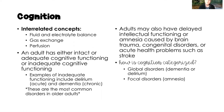Adults can also have delayed intellectual functioning or can suffer from amnesia caused by brain trauma. Delayed intellectual functioning is often the result of a cognitive disorder, but could also be a traumatic brain injury or another acute health problem such as a stroke. Cognition disorders are categorized as global disorders — such as dementia and delirium — or focal disorders, such as amnesia.